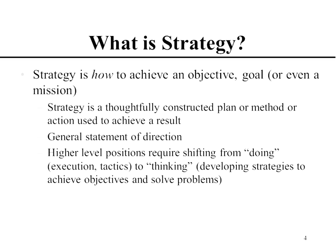What is strategy? It is how to achieve the outcomes — the goals and objectives. Strategy is a thoughtfully constructed plan, method, or action used to achieve a result. It is also a general statement of direction — it is not a statement of action. Strategy does not mean that next week you will hire 50 new people. It means you need to dramatically improve the way you ship and interact with customers. That is the strategy. Then one of the actions would be to hire 50 new people.